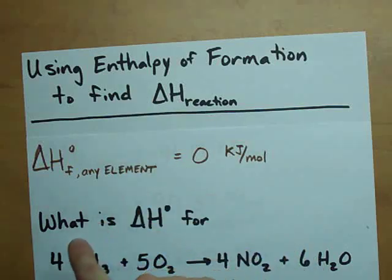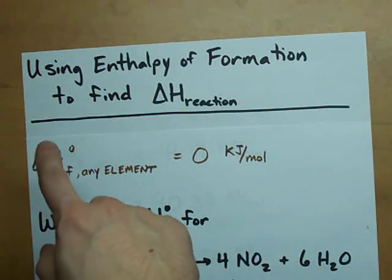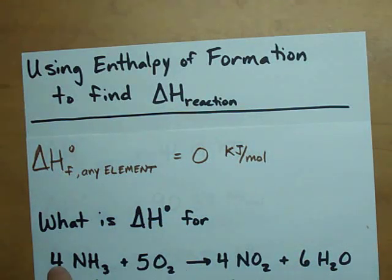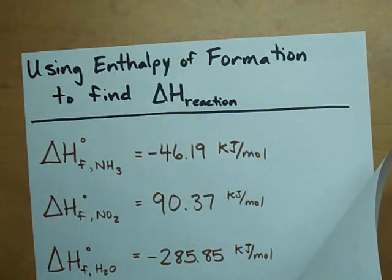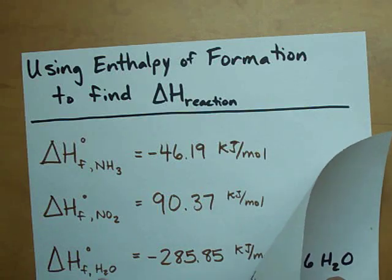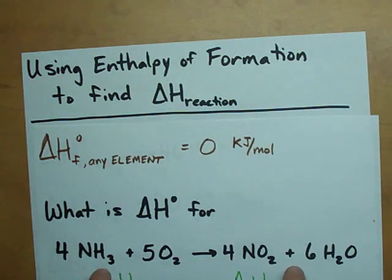Now, if you're given a chemical reaction and asked to find delta H, one way you can do it is to find the delta HF or the enthalpy of formation for all the different molecules that make up the reaction. Usually you'll be supplied with a table of delta HFs like I was here. See, there's the delta HF for NH3 and NO2 and H2O. We're going to need those later when we do this calculation.